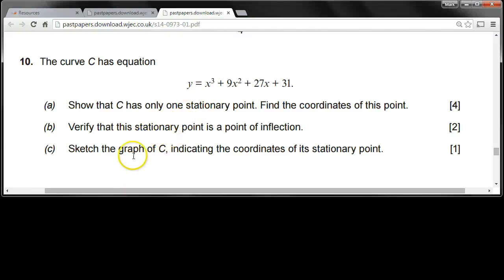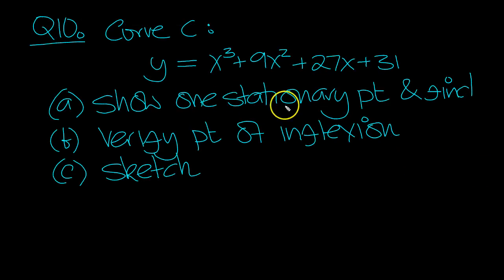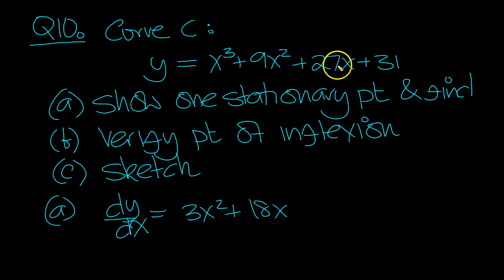Okay then, let's have a look at this one. Here's the curve and here's the question. We've got it down here - stationary point - so let's get the dy/dx then: 3x² + 18x + 27.